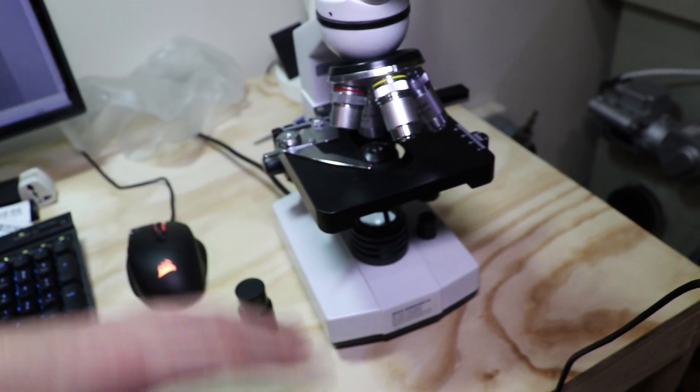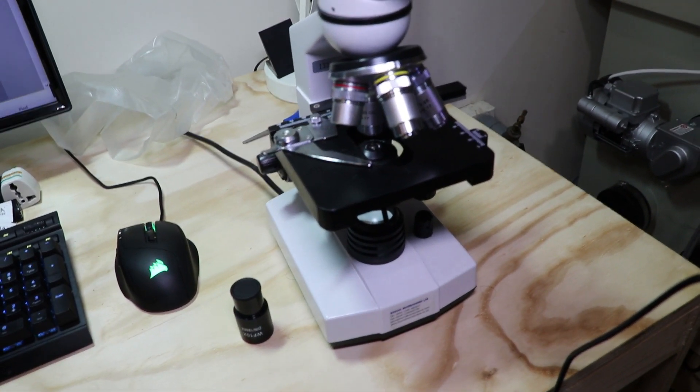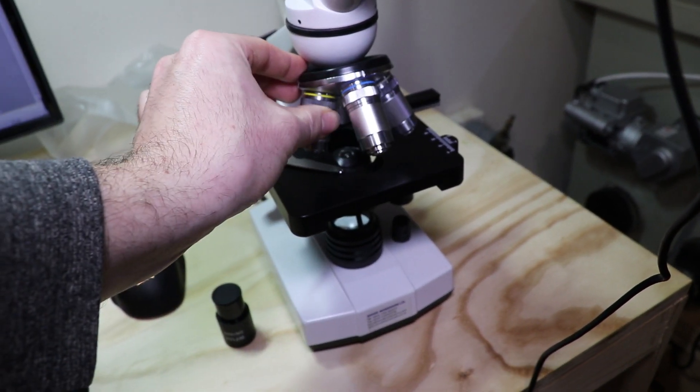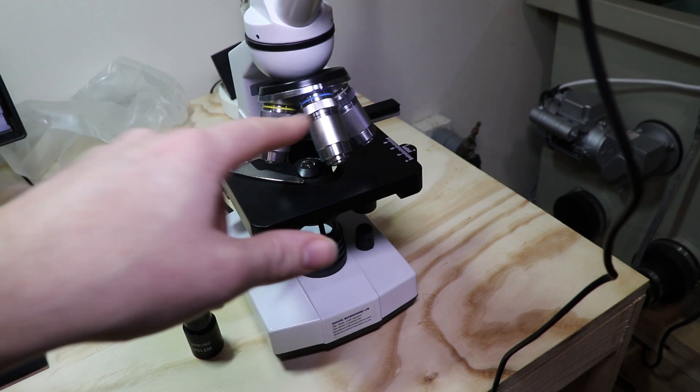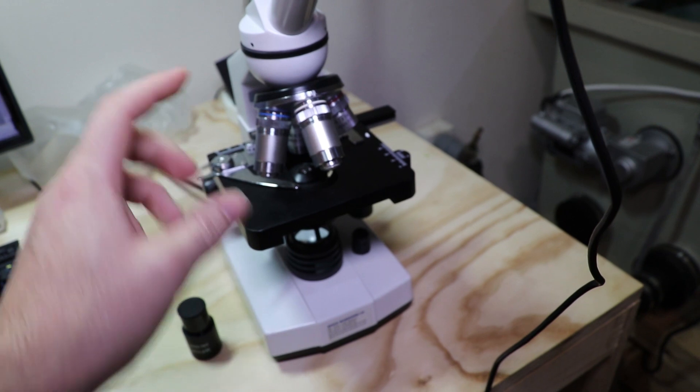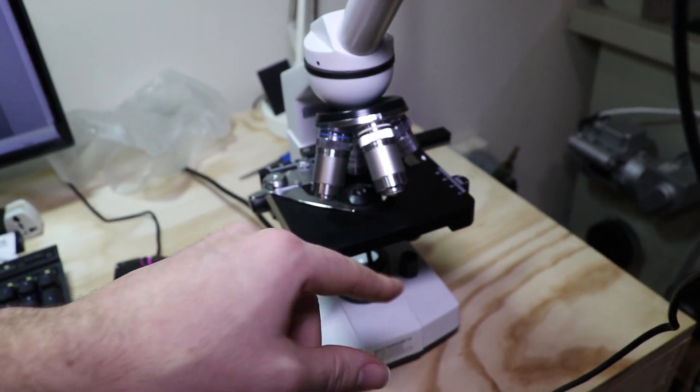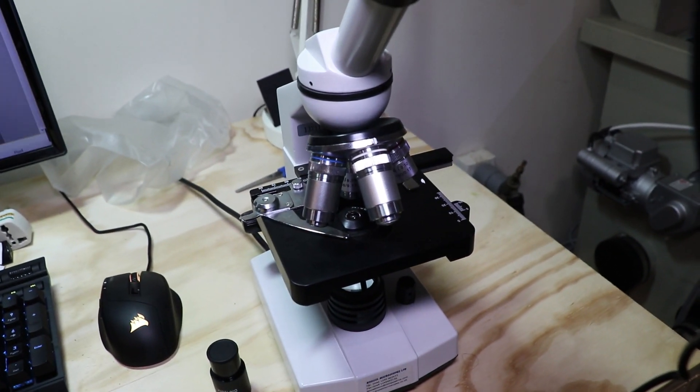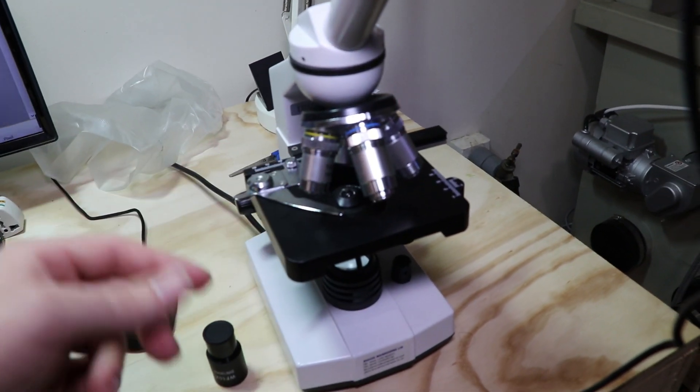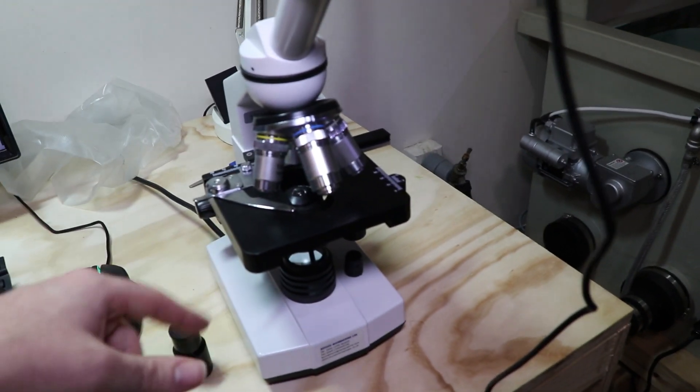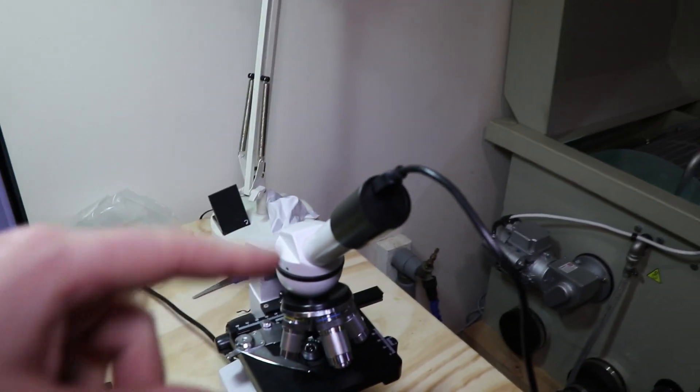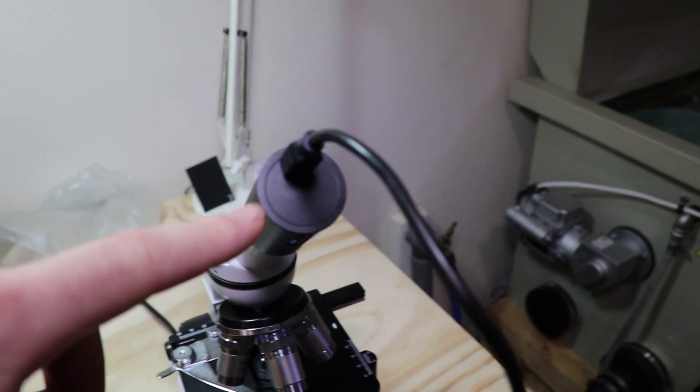Realistically I always use 40x and 100x. 40x you use to have a look around the slide, and if you see any movement then you skip to 100x and have a look at what it actually is that's moving. I will show you 400x and you'll see why it's not really that commonly used. I haven't actually got an eyepiece in it, I'm using a camera.